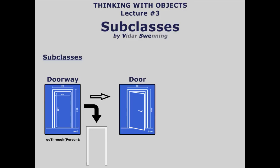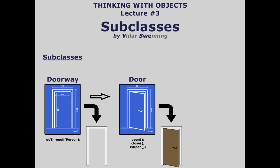Then we wanted to have a Door as well, so we created a subclass called Door, which has all the information from Doorway but also adds extra things like how to open it, close it, and check if it's open. We can approach it to get options to open and close it. If we try to go through it while it's closed, we'll fail; if it's open, we do it exactly the same way as the doorway.